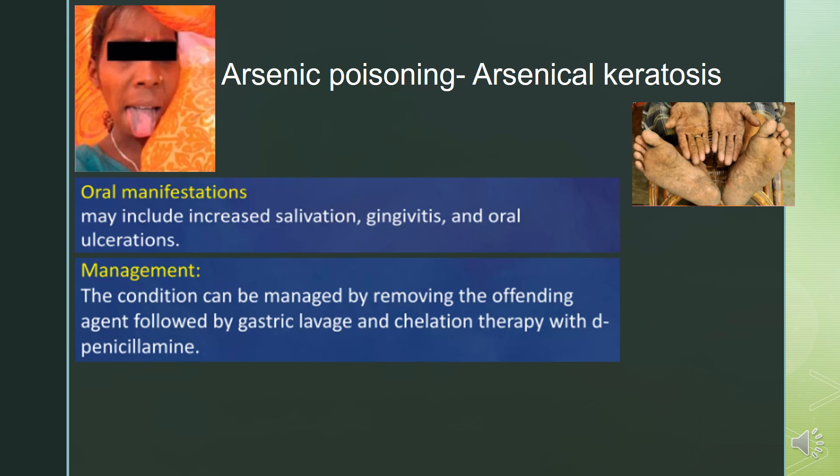Arsenic poisoning, also called arsenical keratosis, has oral manifestations that include increased salivation, gingivitis, and oral ulcerations. The condition can be managed by removing the offending agent followed by gastric lavage and chelation therapy with D-penicillamine.